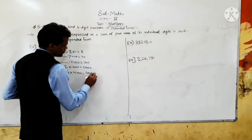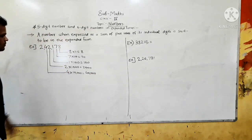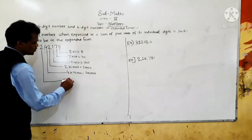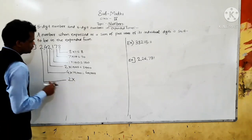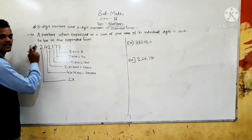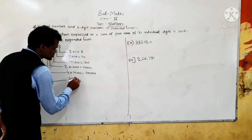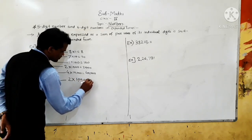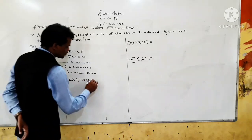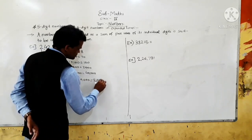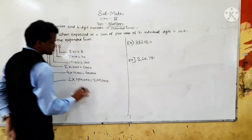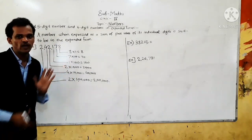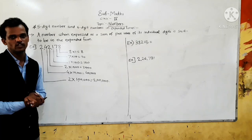And the place value of the leading 2 is 2 × 1,00,000 = 2,00,000 (2 lakh), because it comes at the lakh place. So now we have worked out the place value of each digit.